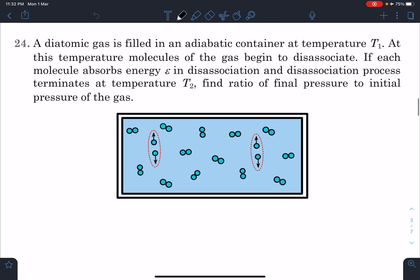Here is the statement of this problem: A diatomic gas is filled in an adiabatic container at temperature T₁. At this temperature, molecules of the gas begin to dissociate. If each molecule absorbs energy of ε (or E) and this process terminates at temperature T₂, find the ratio of final pressure to initial pressure of the gas.